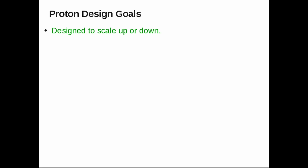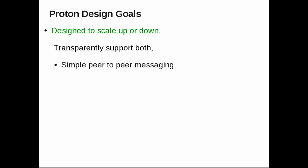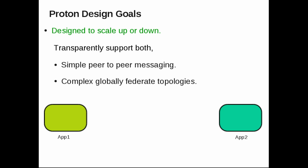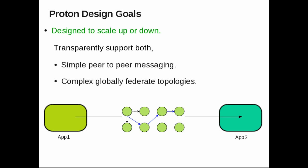Proton is designed to scale easily. It can transparently support both peer-to-peer messaging or a complex globally federated network. For example, let's say we have application 1 and application 2 — you can use Proton directly to communicate with each other. Or it could be a globally federated network. From the application's point of view, it will be totally transparent.